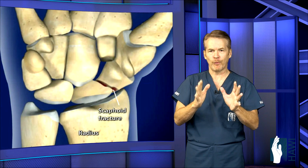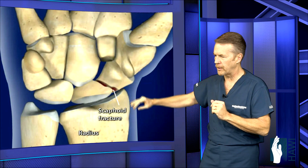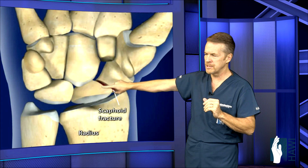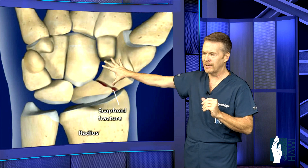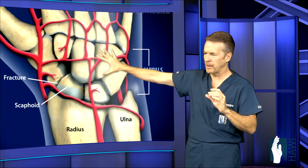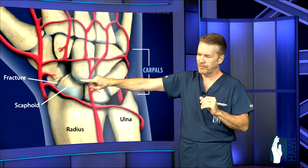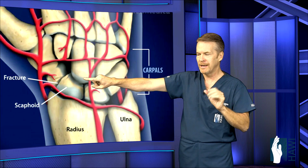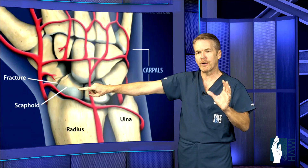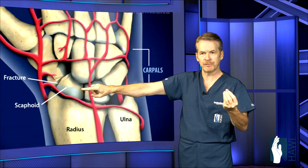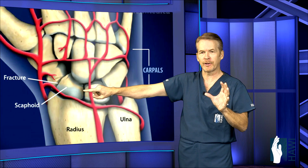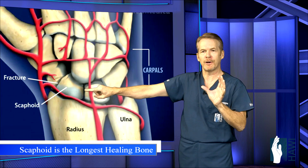Now let's take a look at the scaphoid, which is the most common carpal bone that's fractured. You can see a fracture through this. The scaphoid is the most important carpal bone because it bridges the distal row and the proximal row of bones and links those two together. The circulation to the scaphoid is very tenuous — just beyond the fracture is the circulation, and it's not much. When you break the scaphoid, the proximal portion, or proximal pole, can die and just fall apart like a piece of chalk, or at least take quite a while to heal. The scaphoid bone can take several months to heal and sometimes doesn't heal at all. It's the longest-healing bone in the body, per se.